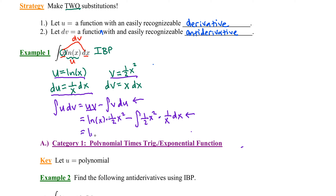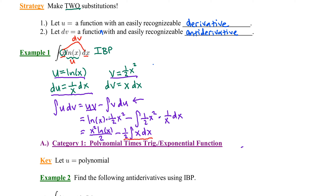Let's go back and simplify. We have x squared natural log of x divided by two. As for the integral, we can factor out the constant coefficient one-half, then we have x squared times 1/x dx. Notice I still have an integral to evaluate, but it is much simpler than the original. One of your goals in integration by parts is to choose substitutions that yield a very simple remaining integral.